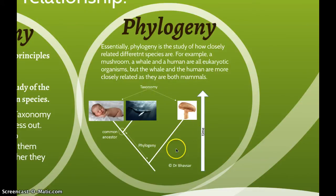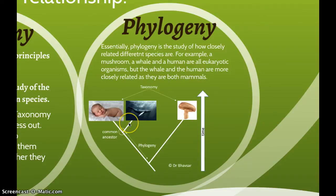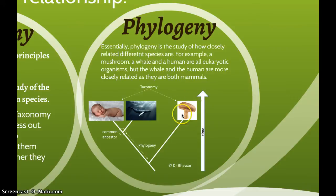This slightly modified diagram from the textbook helps make the distinction. Taxonomy is putting organisms into different groups based on their characteristics. When you use that information to decide how closely related organisms might be — these two being more closely related than that one — that's phylogeny. At these intersection points we assume there must have been a common ancestor, which is most likely no longer around.